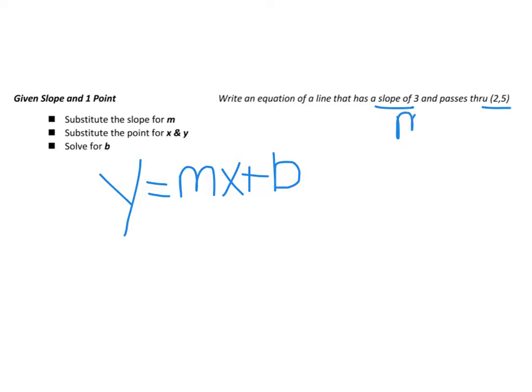So what that is, we know that we have an M, we know we have an X, we know we have a Y. So we're just going to plug that into our equation and the one thing we don't have is a B, so we'll have to solve for that.